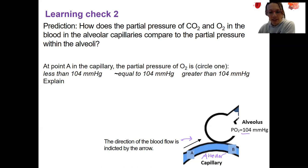First one, at time point A, is the partial pressure of oxygen less, equal to, or greater than 104? You should be able to think about what's going to happen to this alveoli and come up with an answer. Explain.